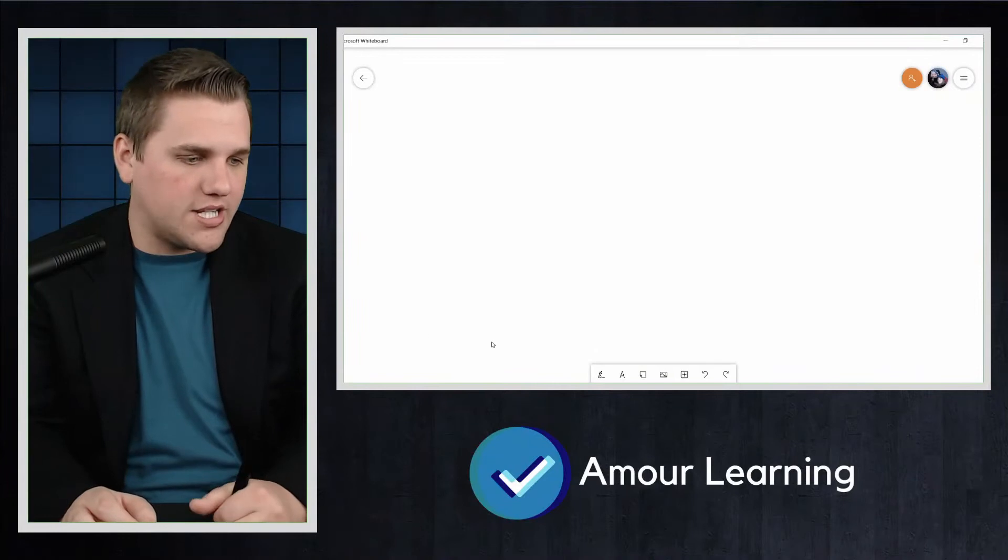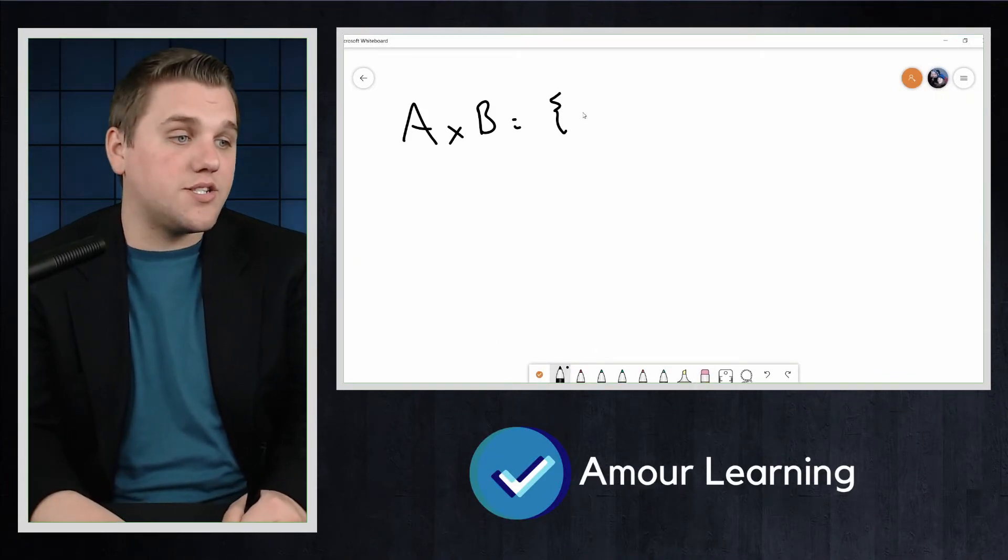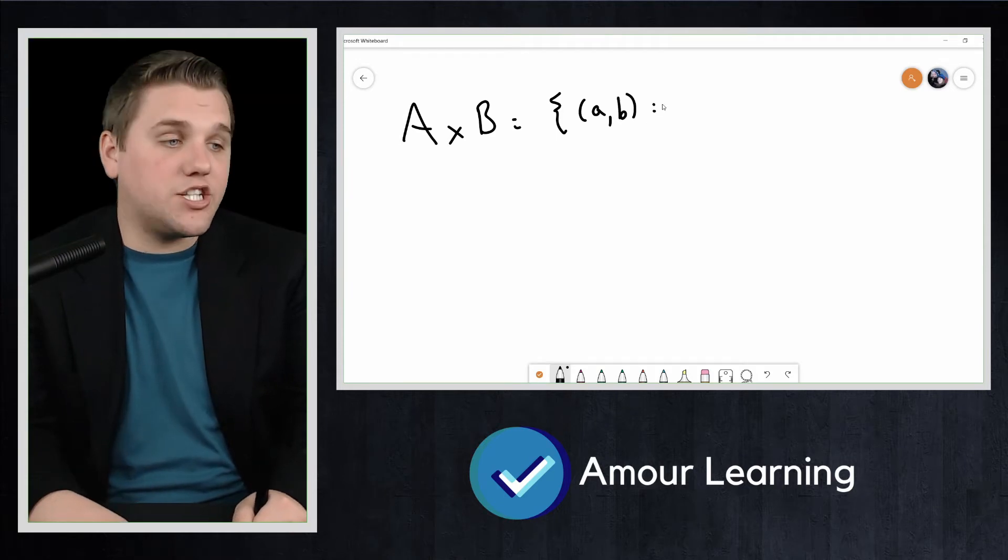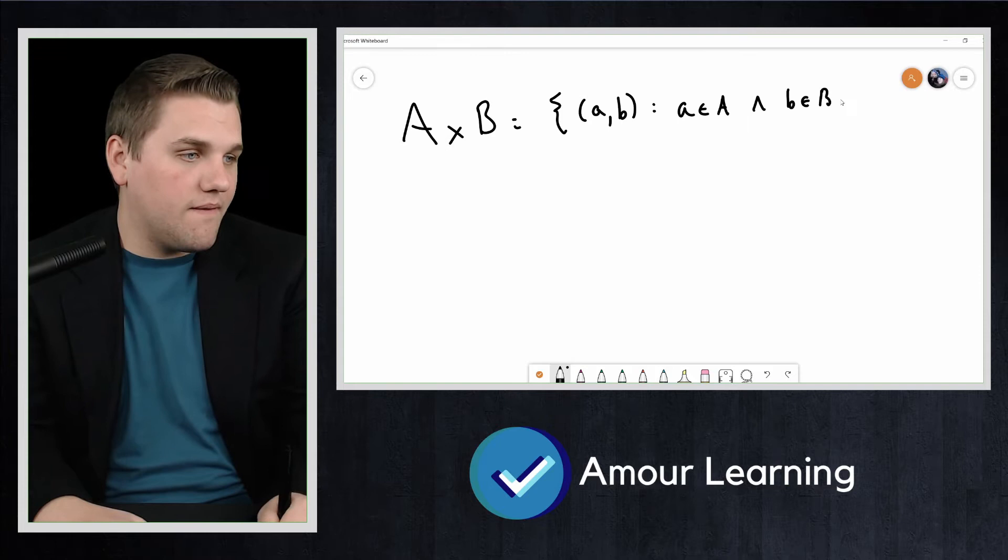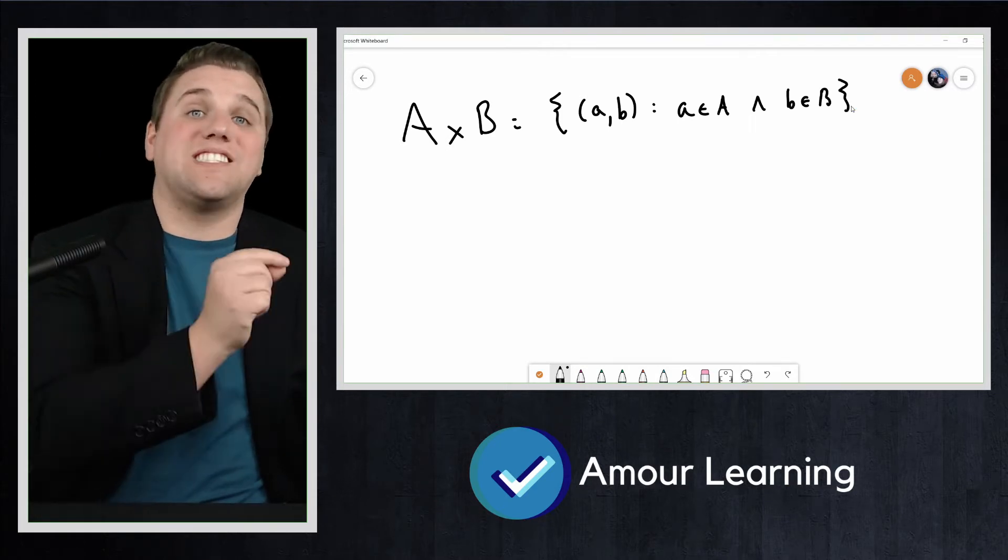We can do this with any pair of sets though, not just the real numbers with themselves. Put another way, we can write the Cartesian product A cross B in general as the set of all ordered pairs (a,b) such that a is in A and b is in B. The first coordinate comes from the first set and the second coordinate comes from the second set.